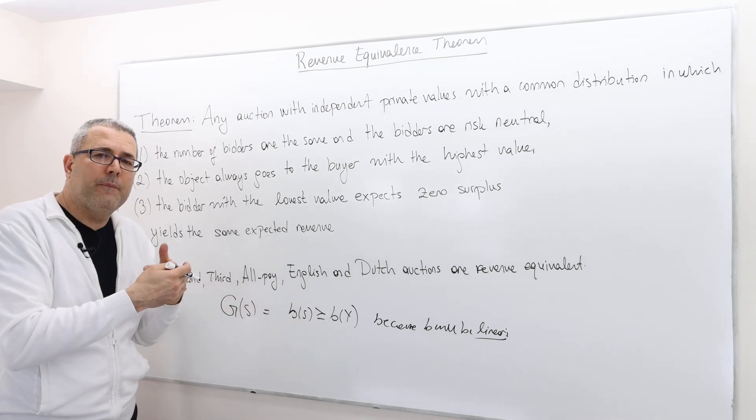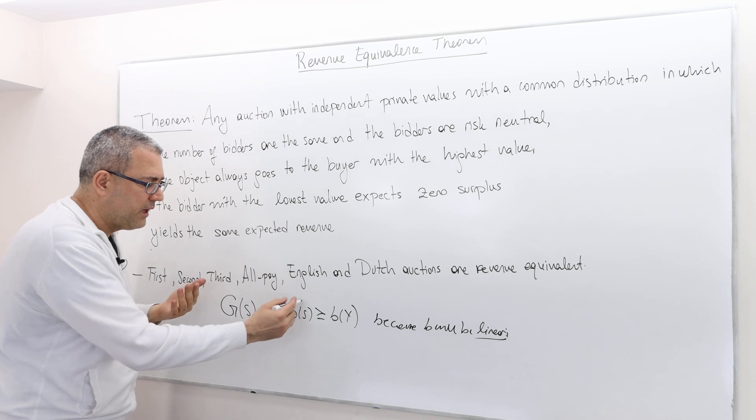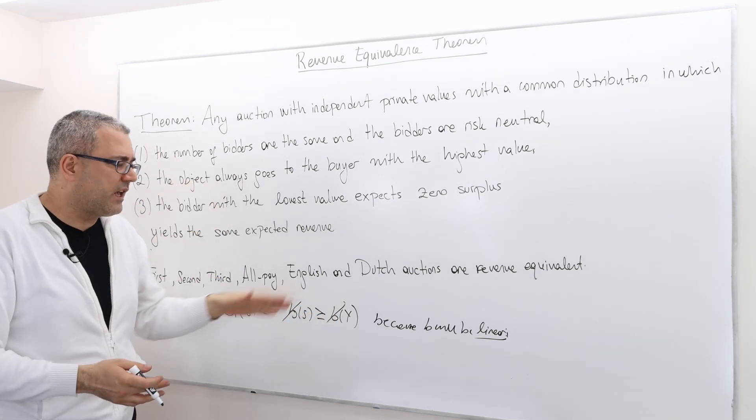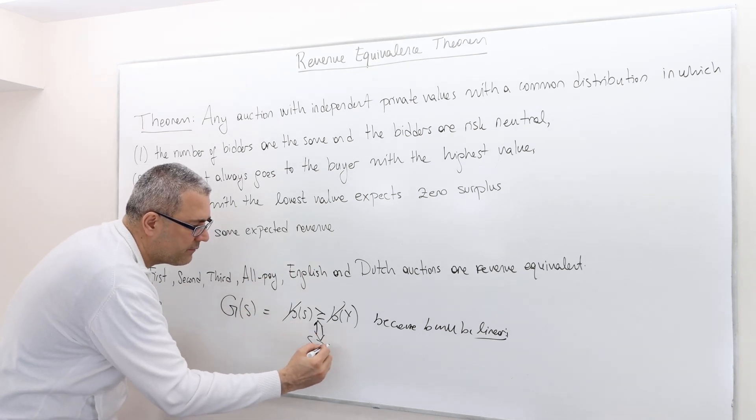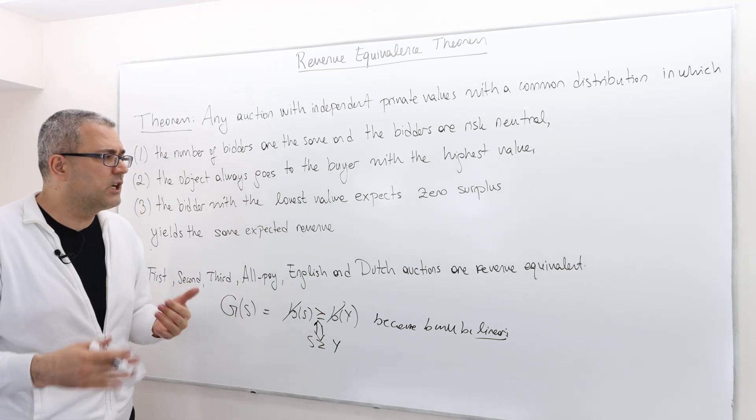I remember in the expected revenue calculations in the first price auction, we said those Bs were just constants. So those constants will cancel each other out. And so that is equivalent to saying S is beating Y.